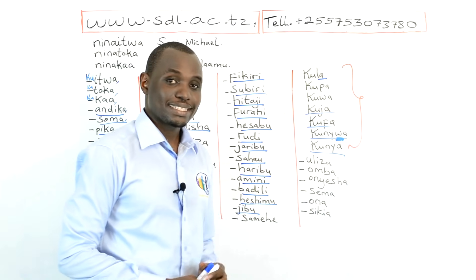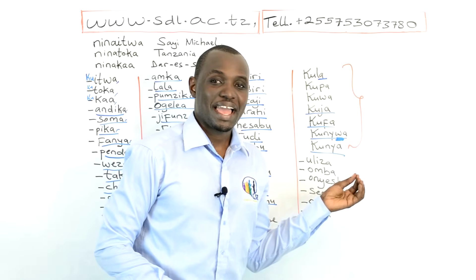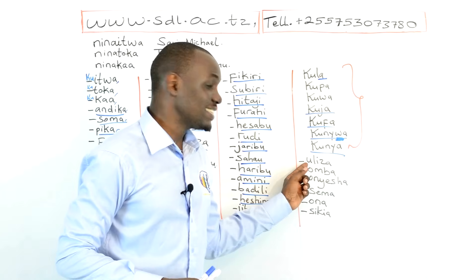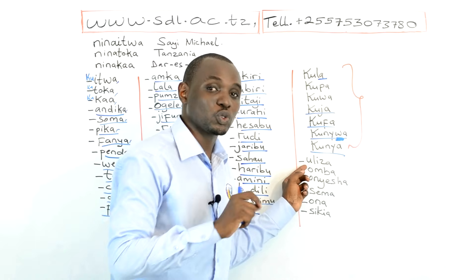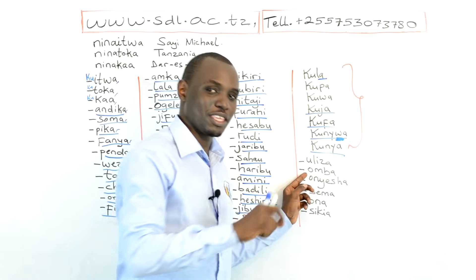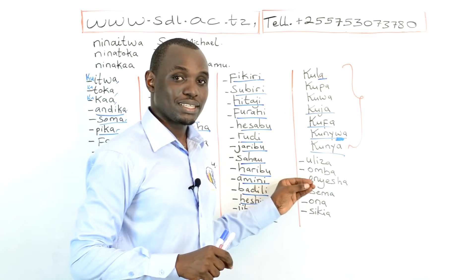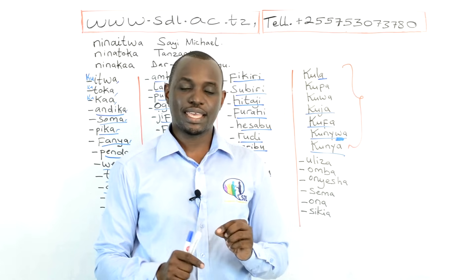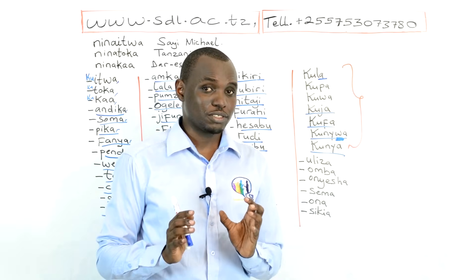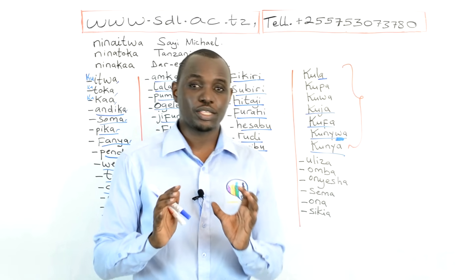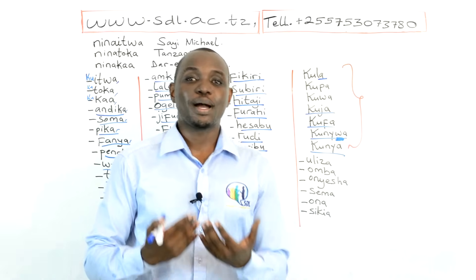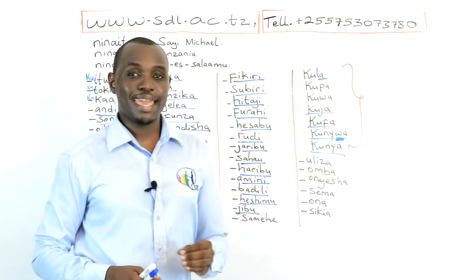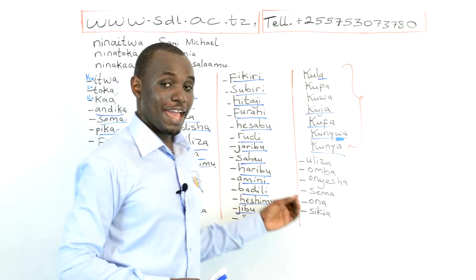Uliza means ask; Ku Uliza means to ask — to ask a question, like to question. Omba also means ask, but it means to ask for something. Do not mix them. Omba is like saying 'May I have that.' So if you want to say 'May I have some water' politely, you say Ninuomba maji — Maji means water, M-A-J-I. Ninuomba maji means 'May I have some water.' It is a very important verb when you want to be polite.